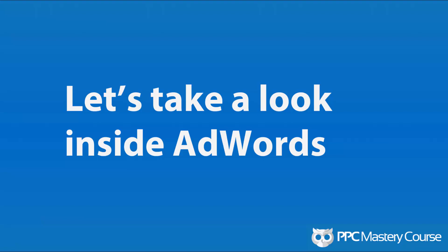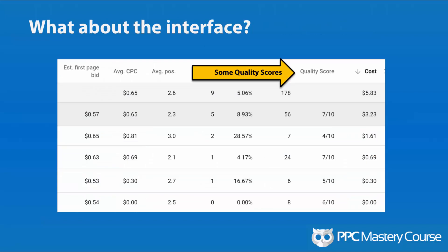I try to download all my quality scores into AdWords Editor using the methods that Google tells us in their support documents, and I am getting no quality scores whatsoever — I'm getting estimated first-page bids and other estimates, but no quality scores. Even downloading statistics with more data, nothing's happening. But if I go into the interface and look at the same account, I do see quality scores for the majority of my keywords — though the first one is actually blank.